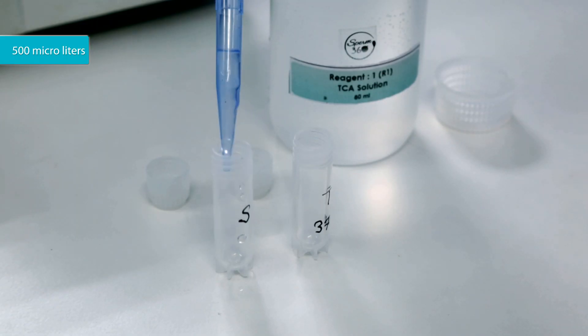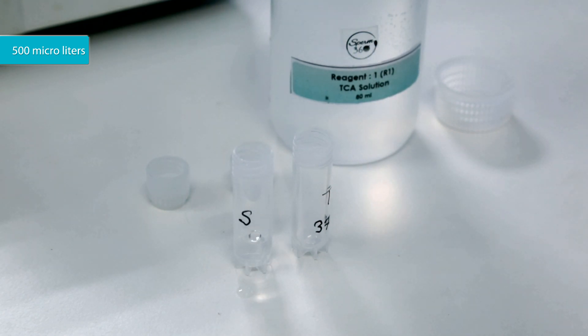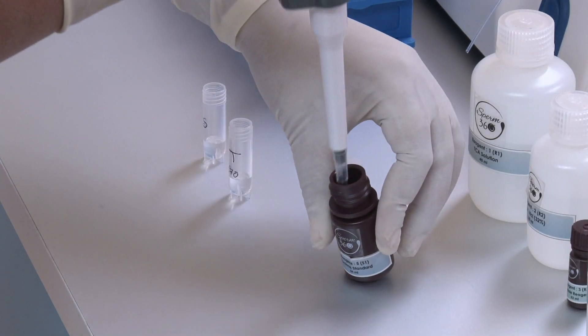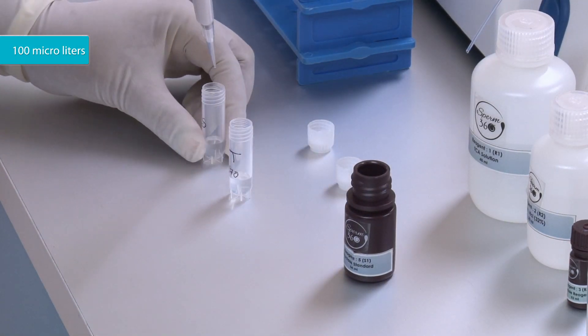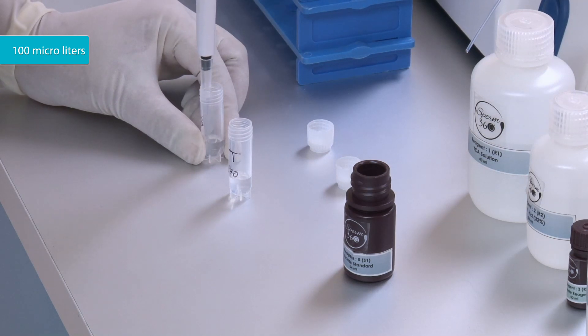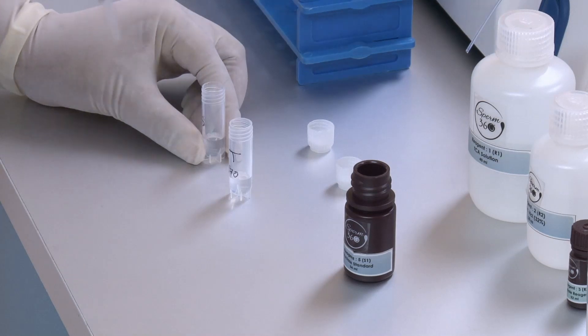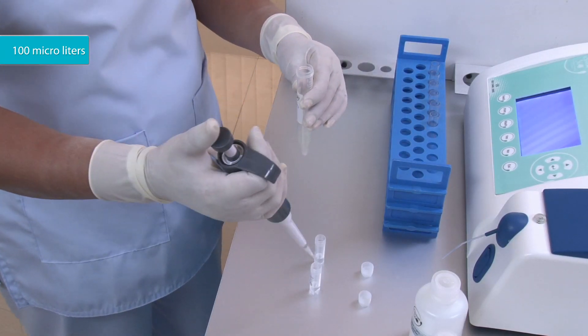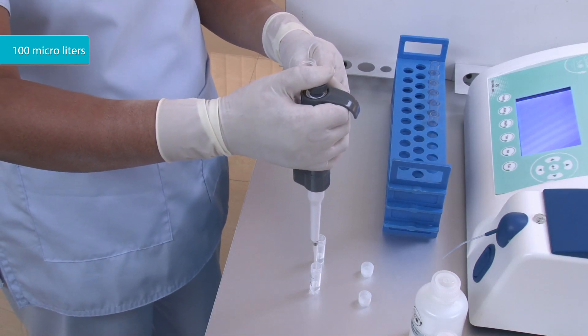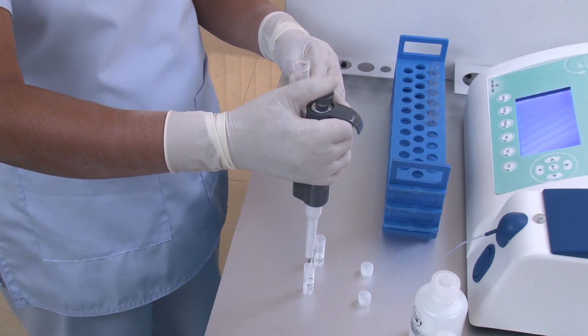Put 500 microliters of Reagent 1 to both tubes. Add 100 microliters of Reagent 5 to the tube labeled Standard. Take 100 microliters of Semen or Seminal Plasma and add it to the tube labeled Test.